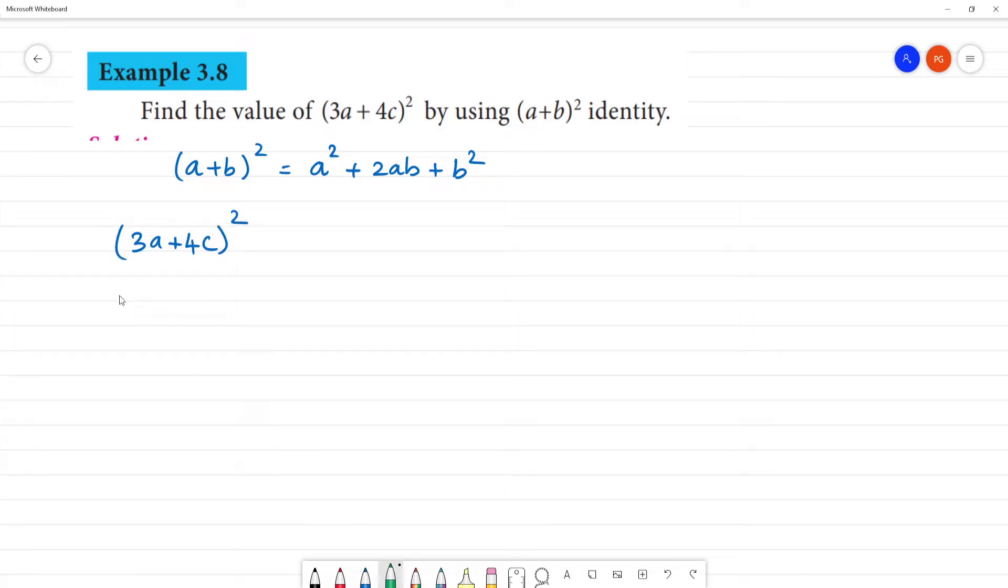So here what is a? a is equal to 3a, b is equal to 4c. Now we substitute into the formula. a² is (3a)² the whole square.